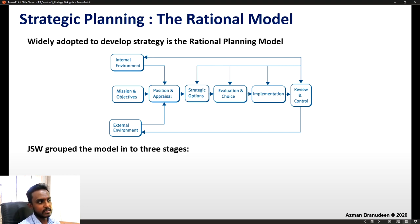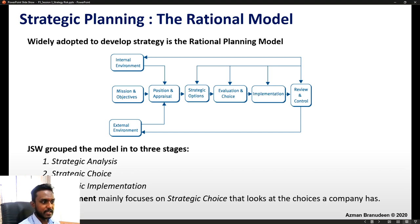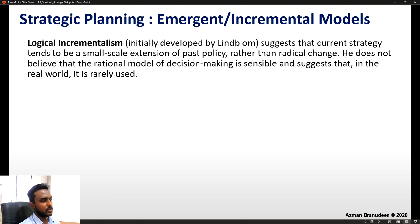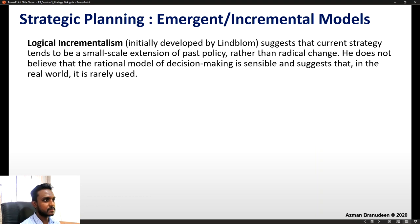JSW grouped this model into three stages: strategic analysis, strategic choice, and strategic implementation. Risk management mainly focuses on the strategic choice — the choices a company has. In contrast to the rational planning model, you have the emergent or incremental models. Logical incrementalism, initially proposed by Lindblom, suggests that current strategy tends to be a small-scale extension of past policy rather than radical change. He does not believe the rational model is sensible and suggests that in the real world it is rarely used.